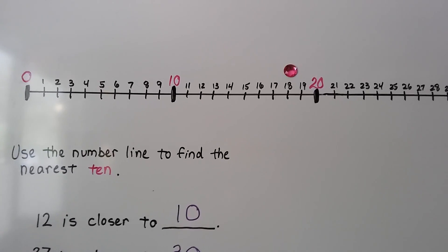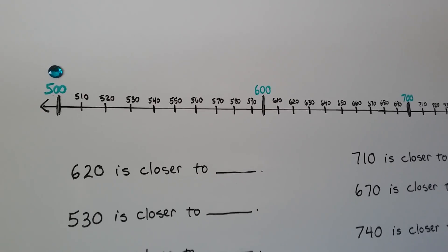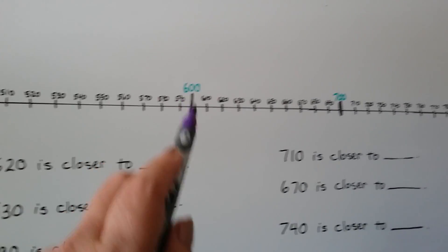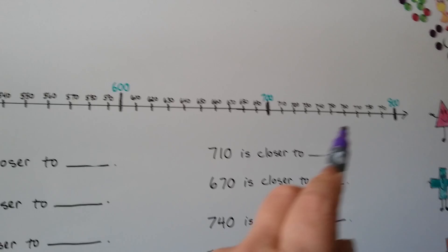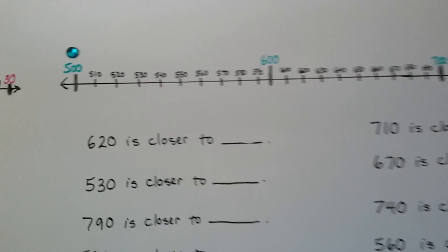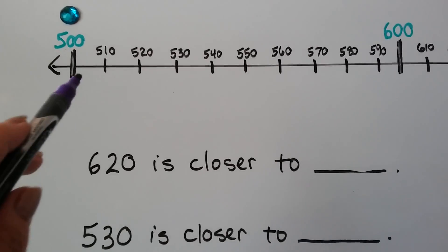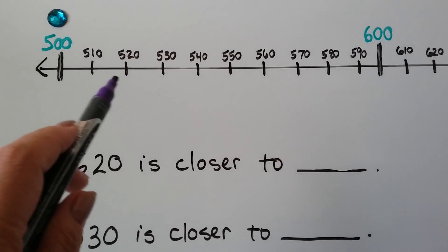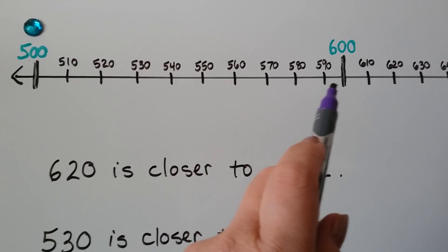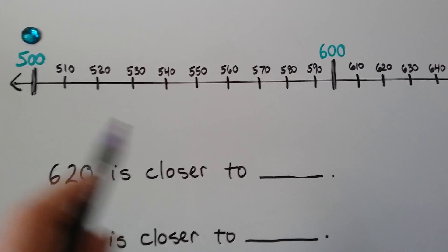Now that's rounding to the nearest 10. Let's try rounding to the nearest 100. I don't have all the hundreds written here, just some. We have 500, 600, 700, 800. So my number line is written counting up by tens and then you can see the hundreds: 510, 520, 530.